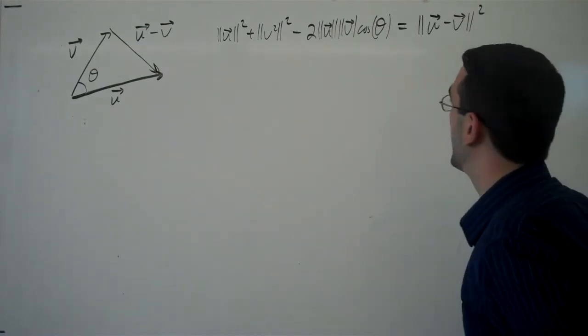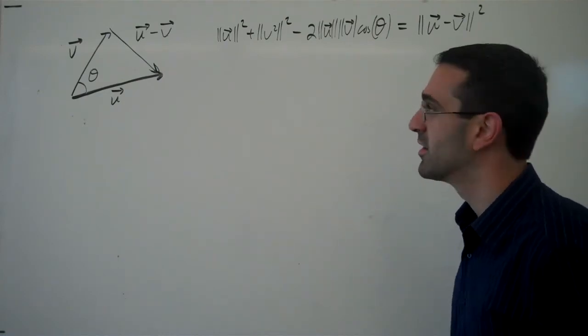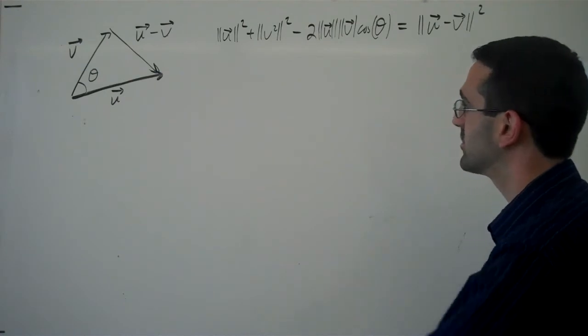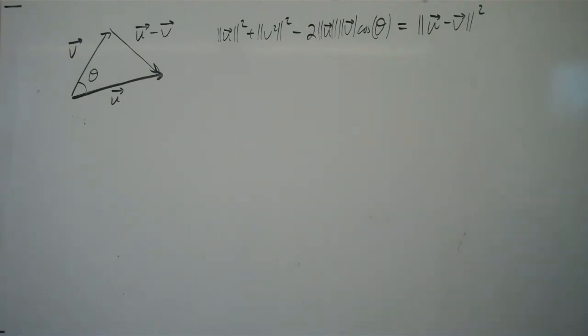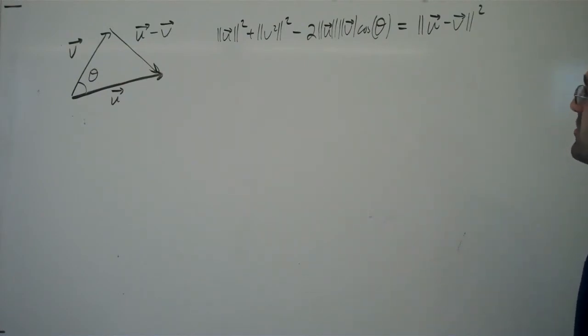And so there is our law of cosines using our angles there. Now in order to go any further, we're going to need to break this thing down a bit. We're going to have to imagine the vectors u and v having components.